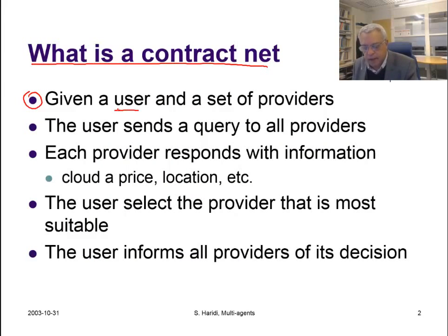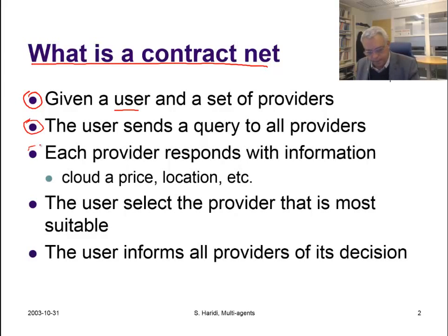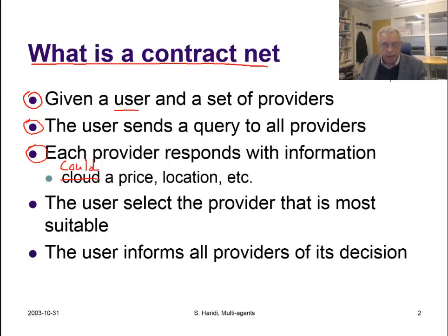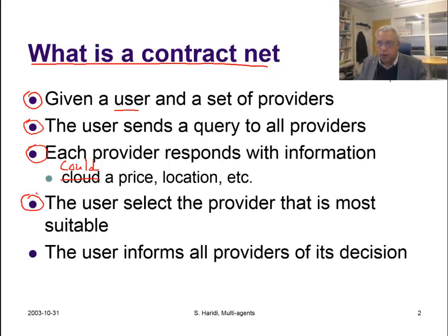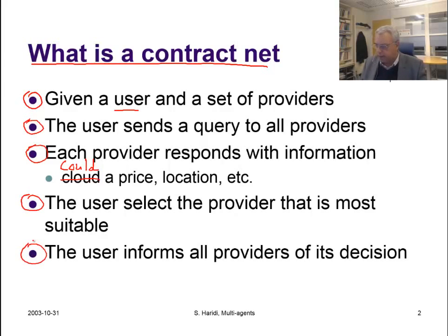Given a user and a set of providers, the user sends a query to all providers, and each provider responds with information — for example, a price or a geographic location. The user then selects the provider that is most suitable: it could be the one with the lowest price or the one that is nearby. The user then informs all providers of its decision.